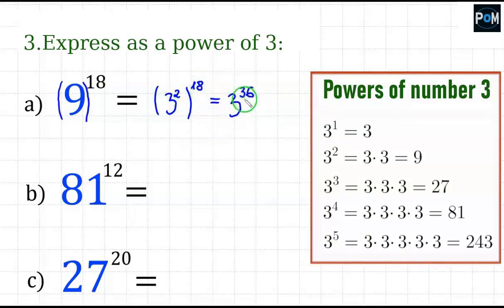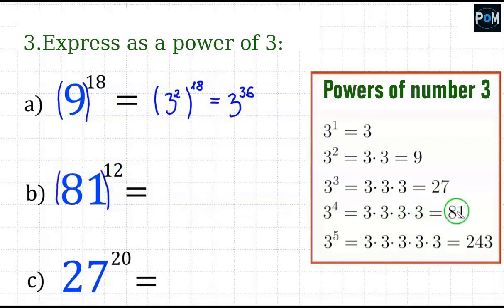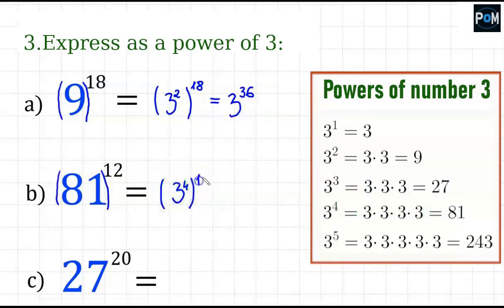In example B, I do the same. The number 81 can also be replaced — 81 is the same as 3 to the power of 4. So in the parenthesis I put 3 to the power of 4, raised to the 12th power. The 3 remains the base, and when I multiply 4 and 12, it becomes 3 to the 48th power.